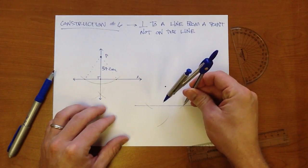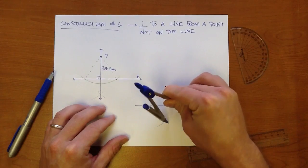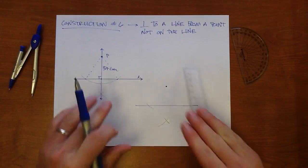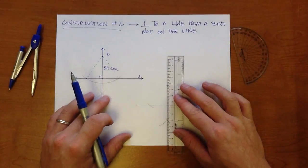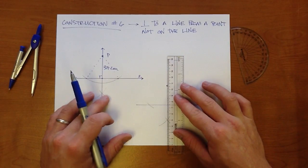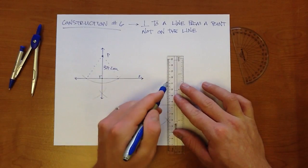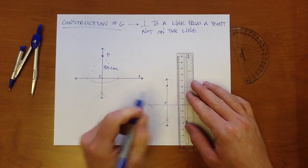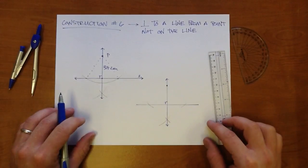Do the same thing on the other side. So you've created another intersection point here. Now all you have to do is connect the dot with the intersection of your arcs. And voila, another perpendicular line through a point not on the line.